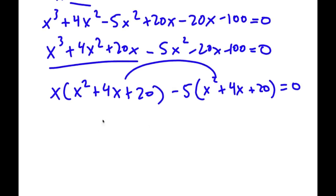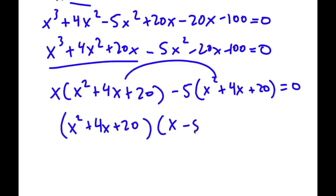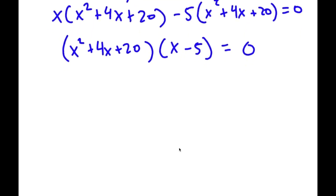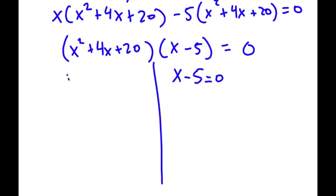And this is equal to 0. The reason I added 4x squared minus 4x squared and 20x minus 20x was so that both groups could factor out the same common factor — they both have x squared plus 4x plus 20. Now, if I factor out (x squared plus 4x plus 20), I get (x squared plus 4x plus 20) times (x minus 5) is equal to 0. So now this gives me two equations: x minus 5 equals 0, and x squared plus 4x plus 20 equals 0.